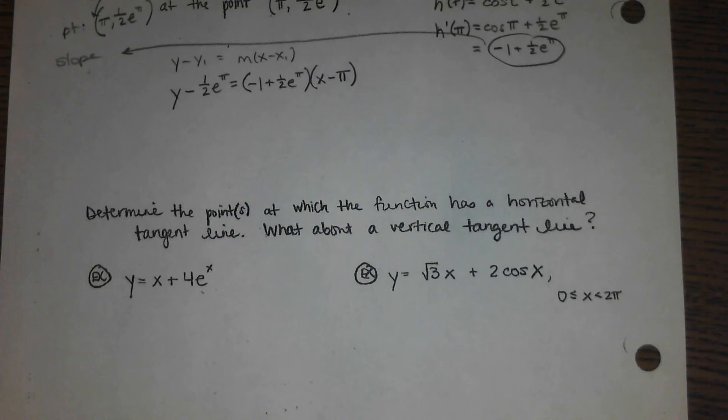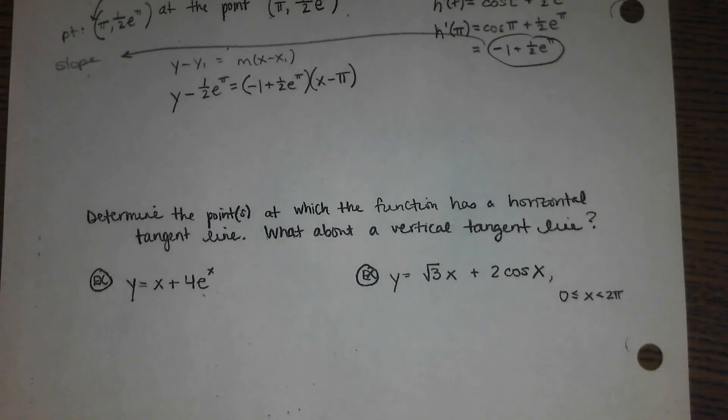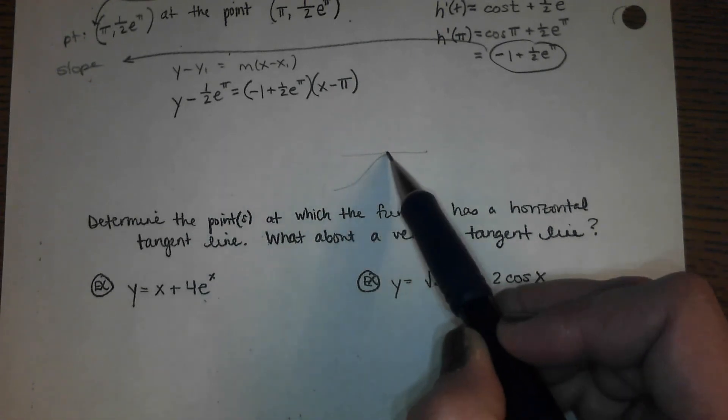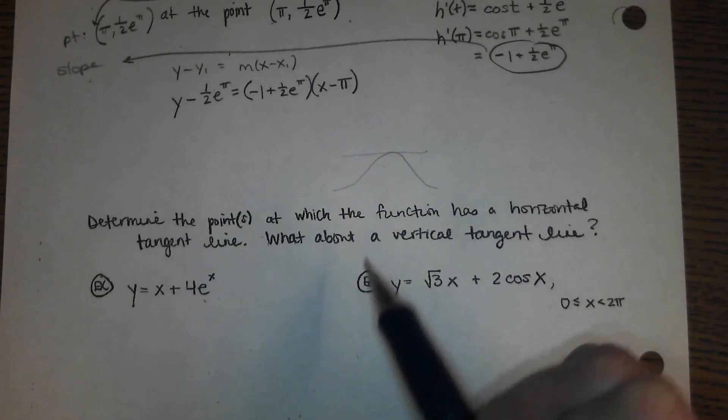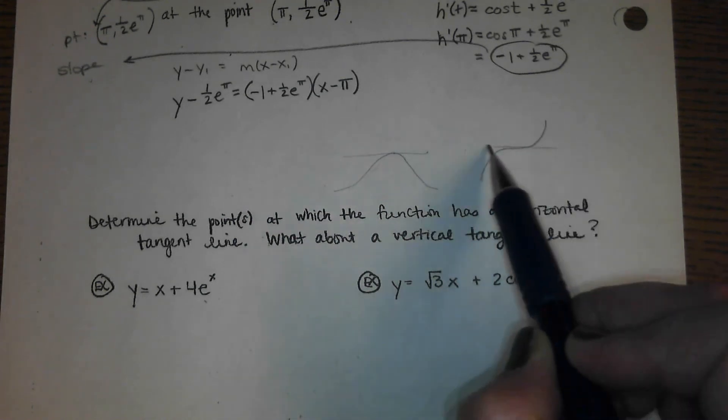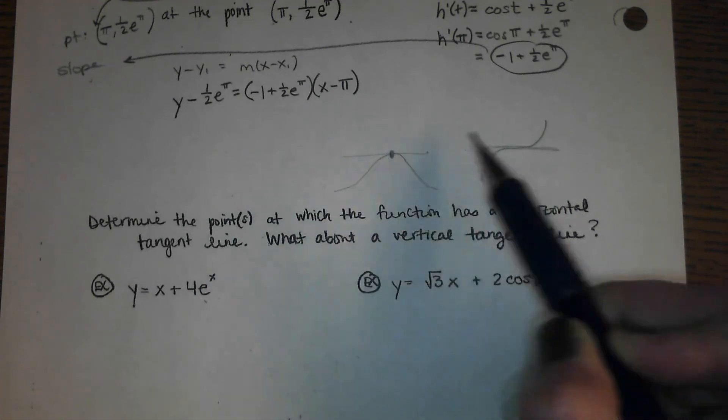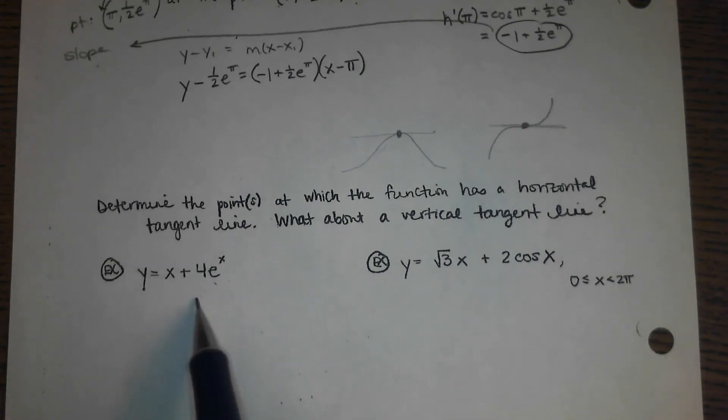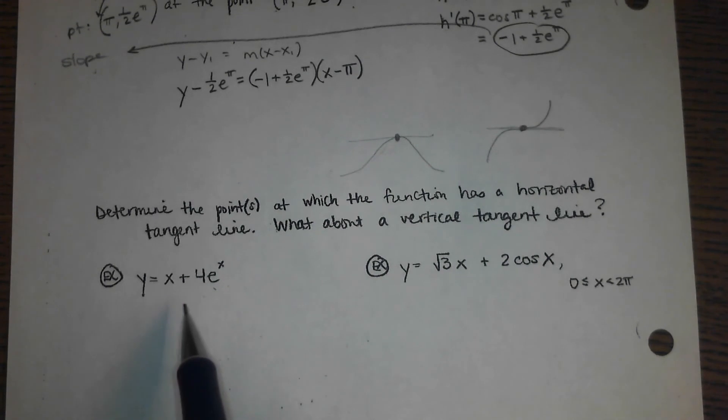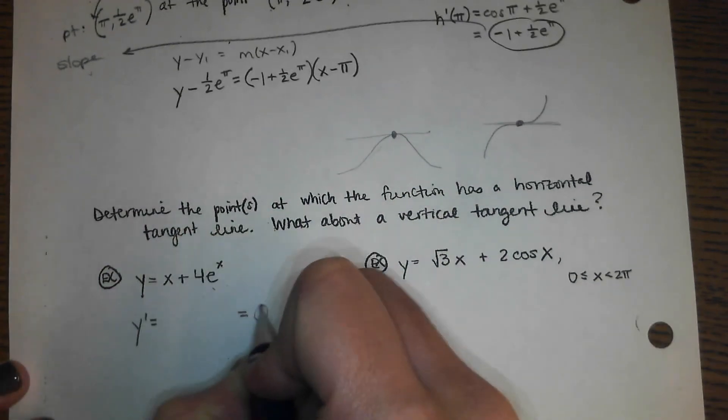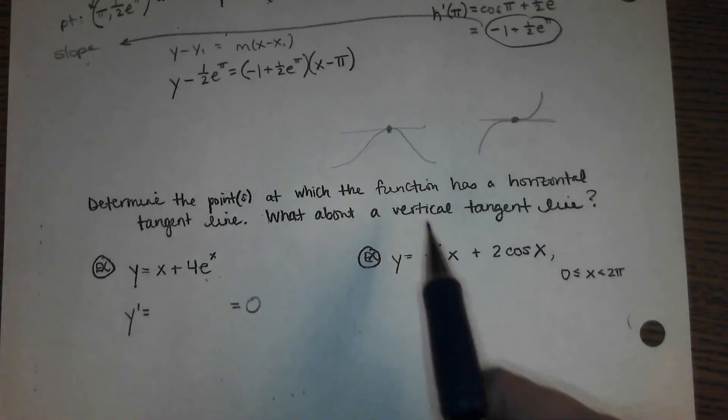And determine the points at which the function has a horizontal tangent line. If something has a horizontal tangent line, what does it mean about the slope at that location? Here's a curve that has a horizontal tangent line. What does it mean about the slope at that point of tangency? Zero. So we essentially want to find the location where this derivative equals zero. We want to know where does y prime equal zero. So we have to find y prime and then set it equal to zero.